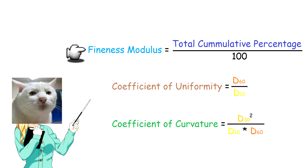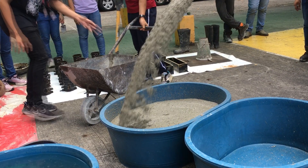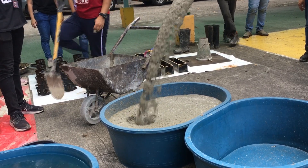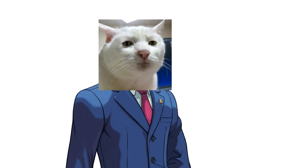Fineness modulus is used as an index to give ideas about the fineness and coarseness of aggregates. The coefficient of curvature and the coefficient of uniformity are used to classify a well-graded aggregate. Well-graded fine aggregates will enhance the workability and finishing quality of concrete, and the use of properly graded aggregates will produce a dense concrete.